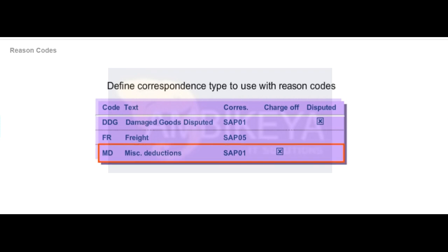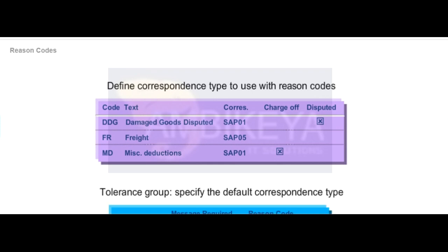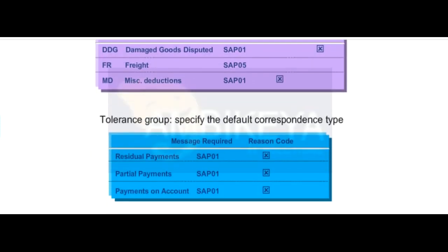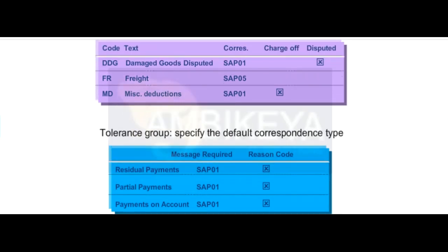For example, if your customer short pays an invoice without explanation, you can follow up with a letter requesting an explanation using the MD, or Miscellaneous Deduction, Reason Code and a specific correspondence type. A payment notice is created only according to the reason code as long as all the reason codes carry the same correspondence type.